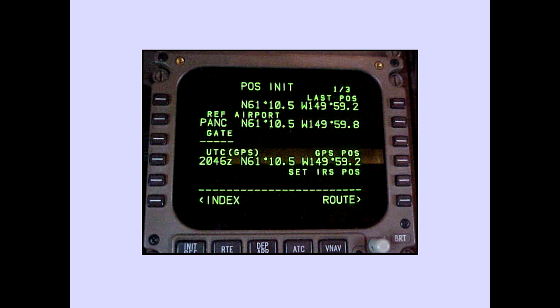If GPS is not available, enter the most accurate latitude and longitude information available using the following in order of preference: Published gate coordinates, reference airport coordinates, and finally, manually compute and enter the latitude-longitude position. Remember to record the latitude-longitude position entered in the set IRS position line on the master flight plan.